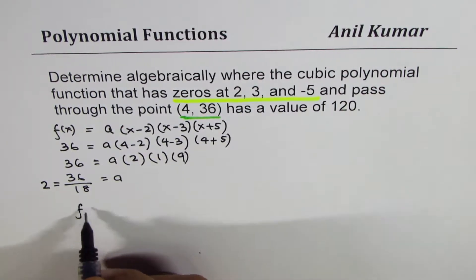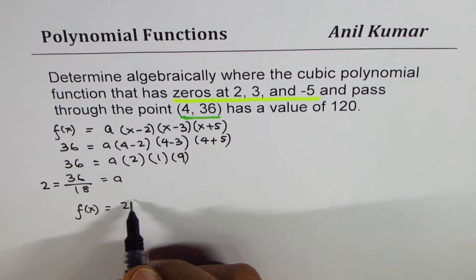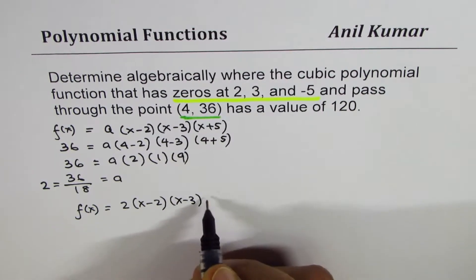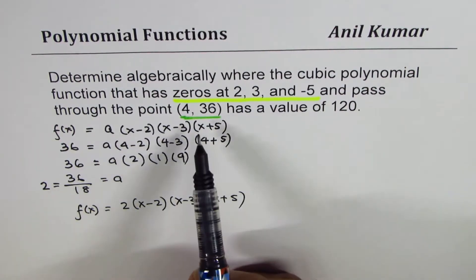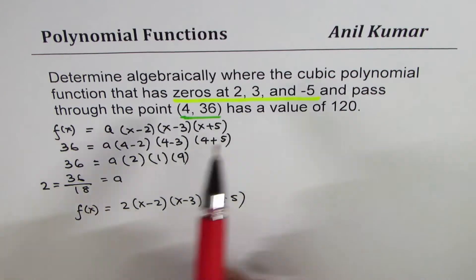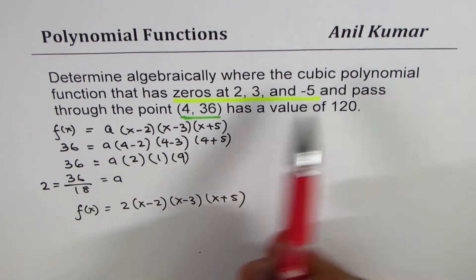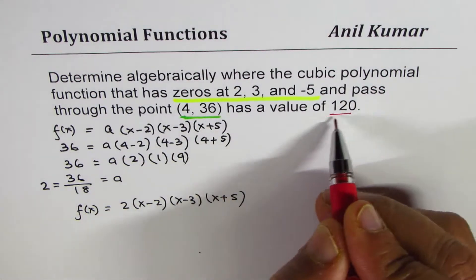So the equation of this function is 2(x - 2)(x - 3)(x + 5). So we have done the first part of getting to the equation, and now let us find, determine algebraically where the cubic polynomial function, which has all these zeros and passes through this, has a value of 120.